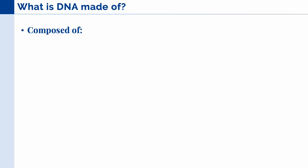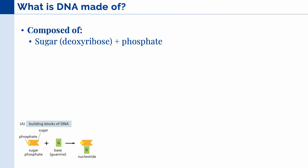First, what is DNA made of? DNA is composed of first a sugar, in this case deoxyribose, and a phosphate. Together, we call that the sugar phosphate. Next, it is also composed of a nitrogenous base, and together, the sugar phosphate and the base are called a nucleotide.